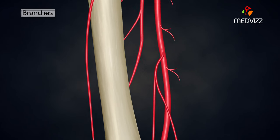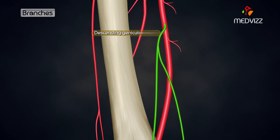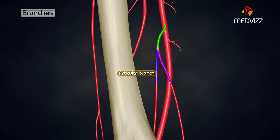The descending genicular artery leaves the adductor canal by descending within the substance of the vastus medialis, where it divides into two branches: articular and saphenous branches.